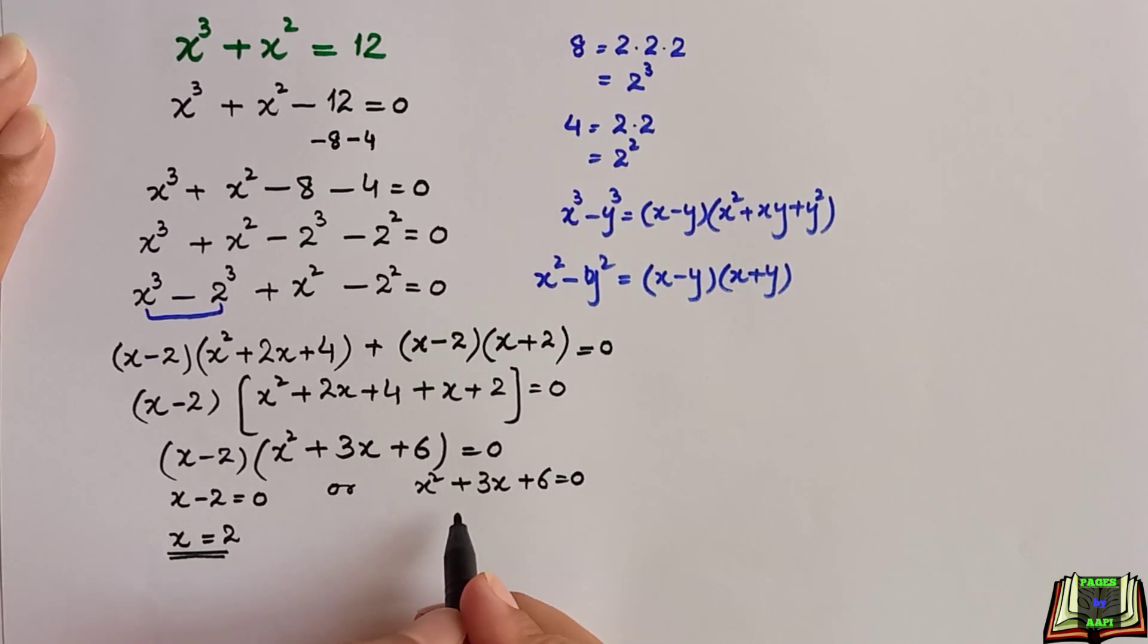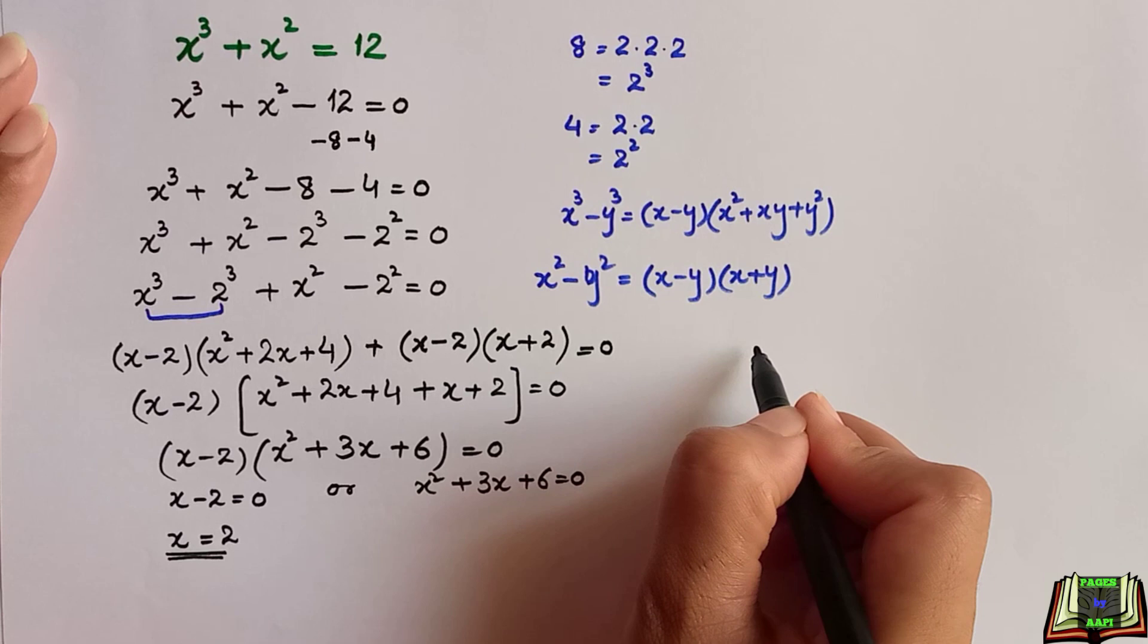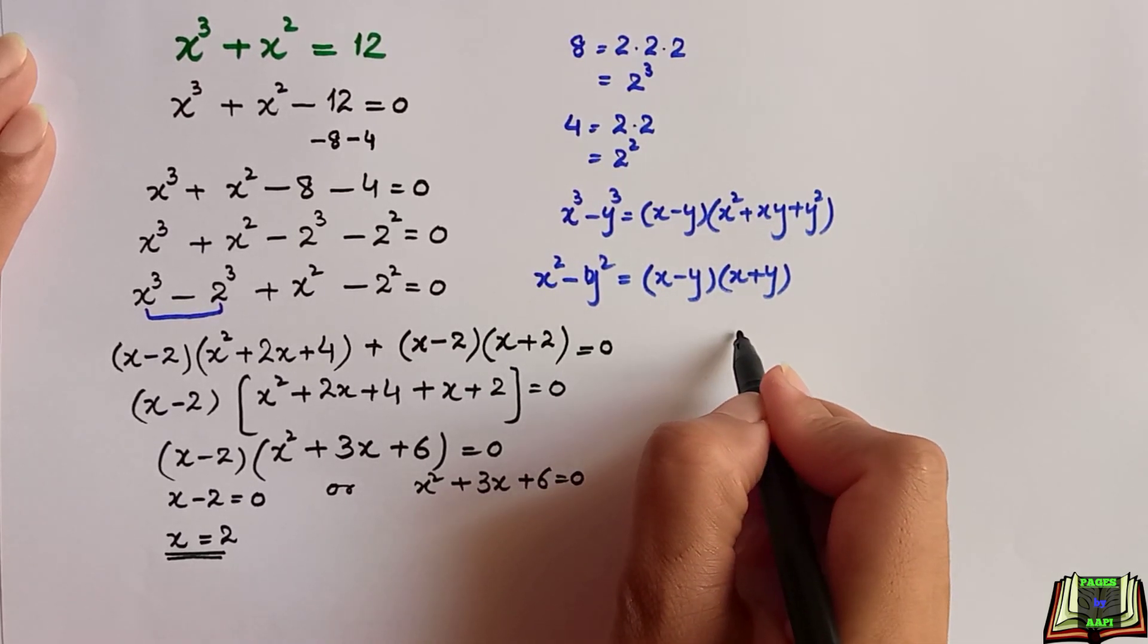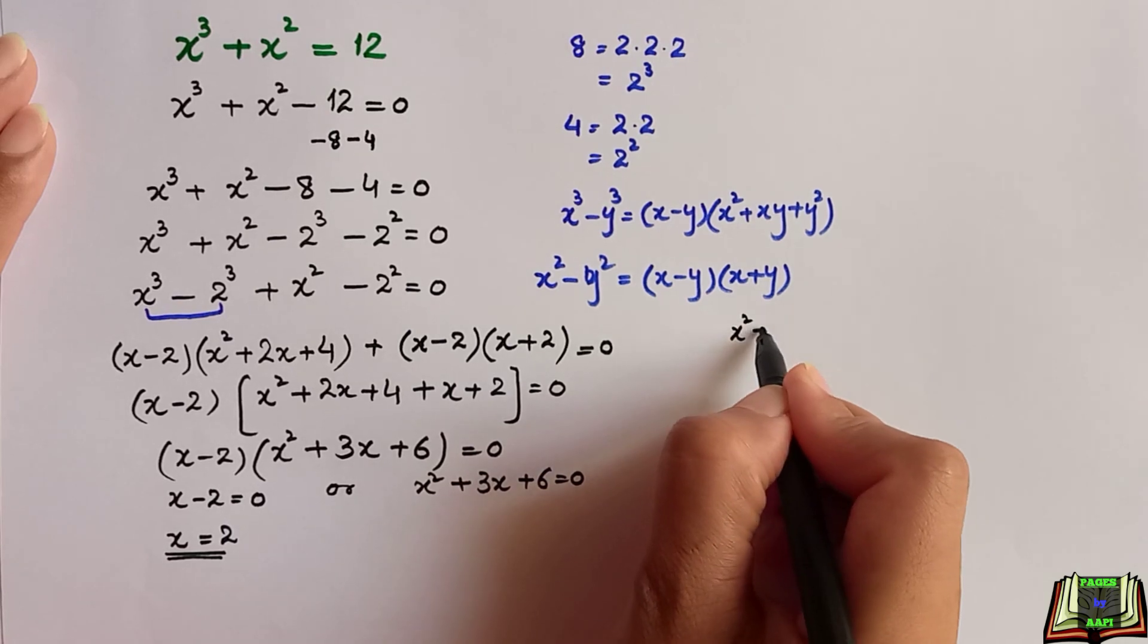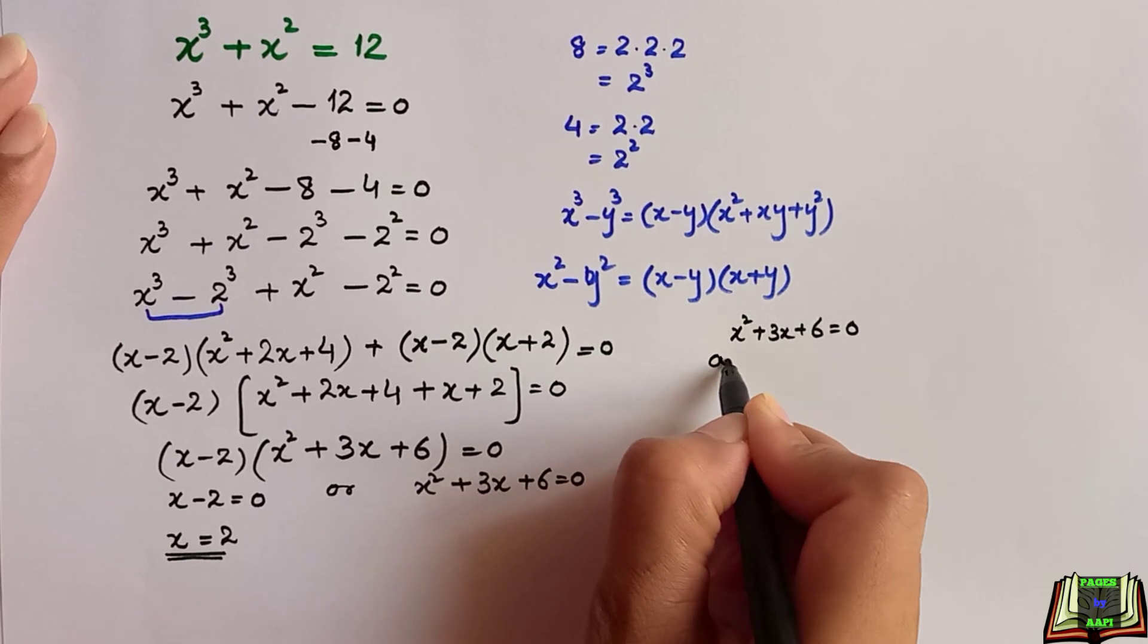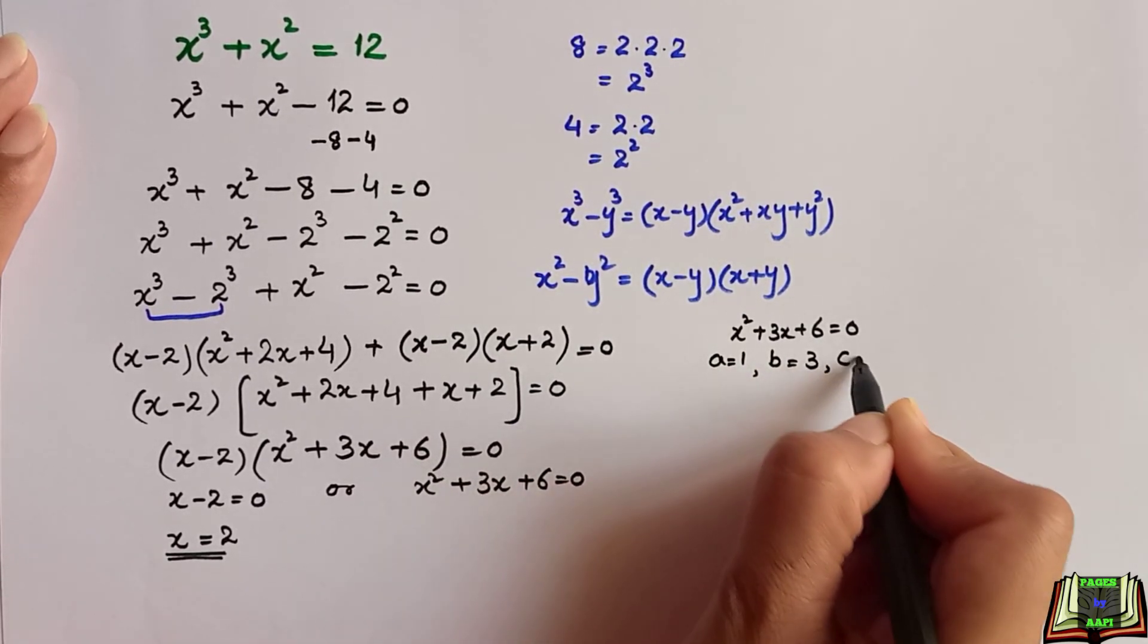Now we have to find the root from this equation. This is the form of quadratic equation, and to solve any quadratic equation we use the quadratic formula. So let's find the root of this quadratic equation x square plus 3x plus 6. We know a is 1, b is 3, and c is 6.